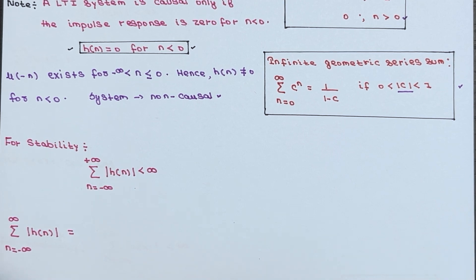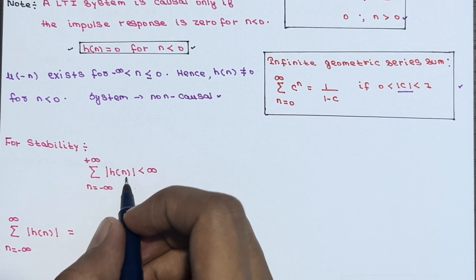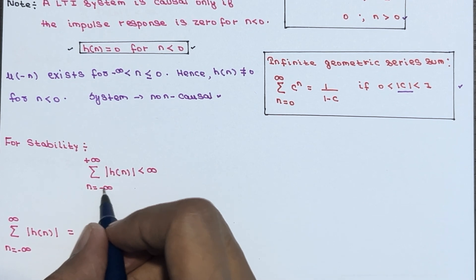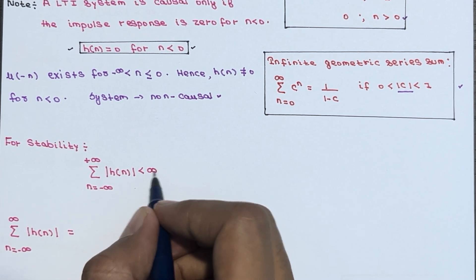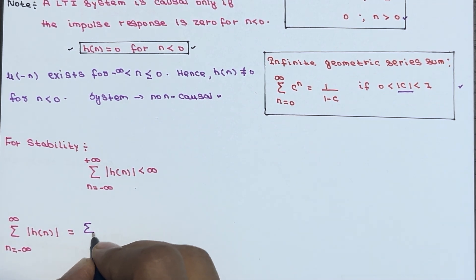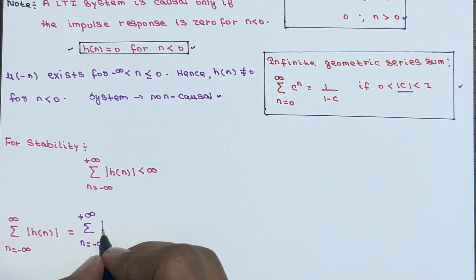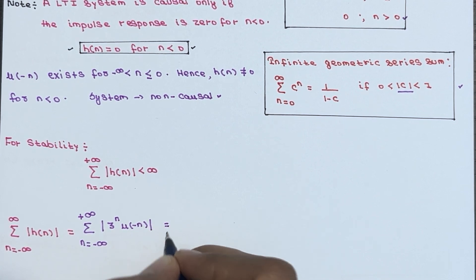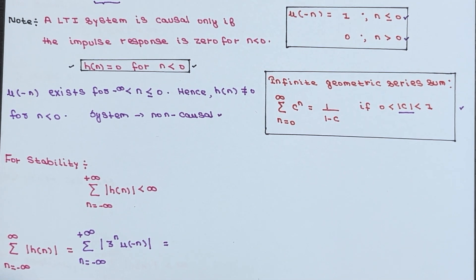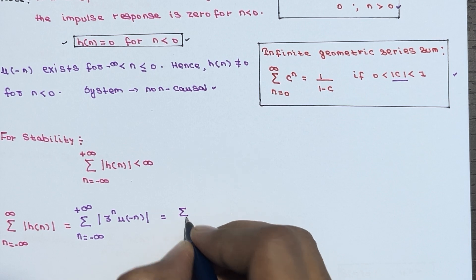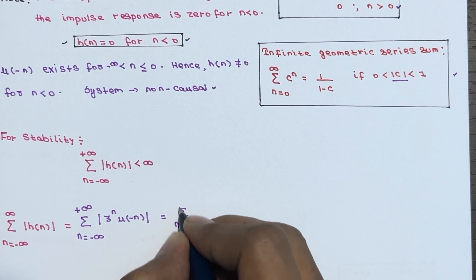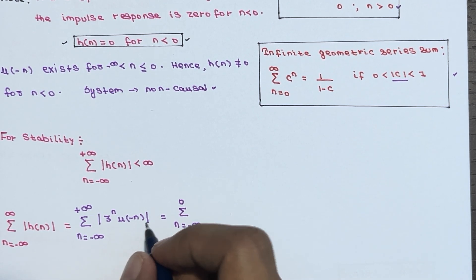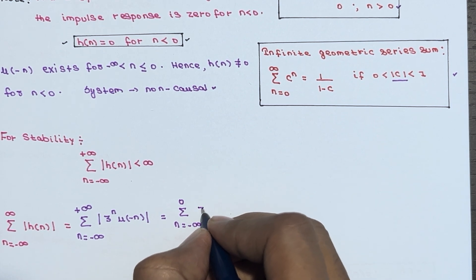For stability, the summation of the absolute value of h(n) from n = minus infinity to plus infinity must be less than infinity. Let's calculate: summation from n = minus infinity to plus infinity of |3^n · u(-n)|. Since u(-n) only exists for n ≤ 0, we change the limit to n from minus infinity to 0, and u(-n) equals 1, so this becomes the sum of 3^n.